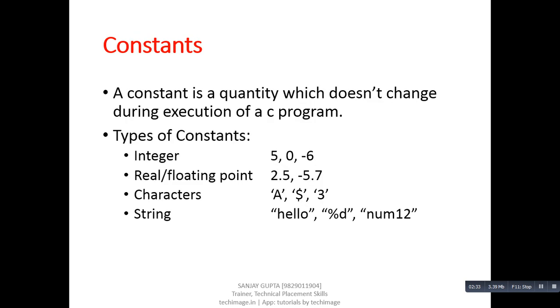Moving on to the next feature which is known as constant. A constant is a quantity which doesn't change during execution of a program. Constants are entities on which any operation can be performed by the program. There are total four types of constants available in C.